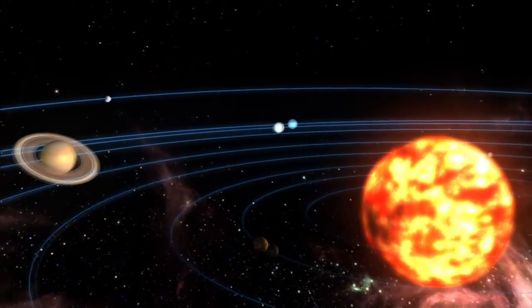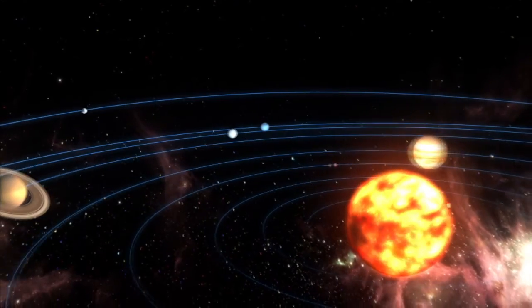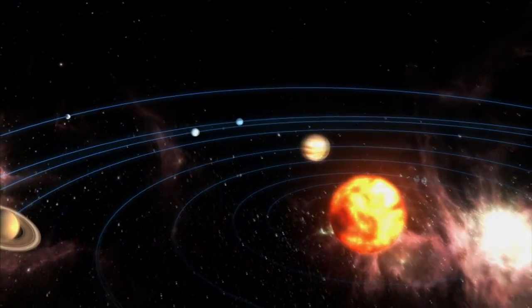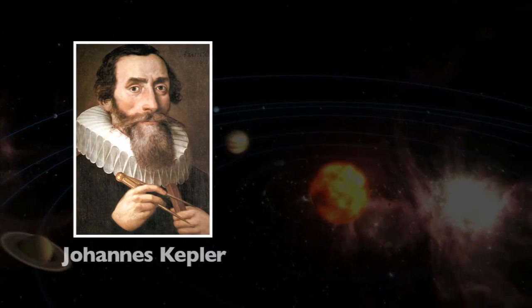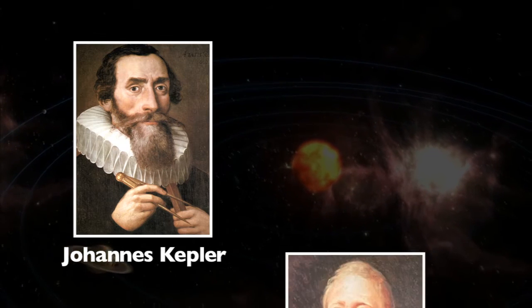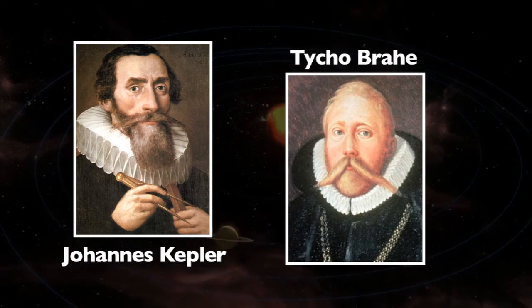The shape of a planet's orbit is an ellipse. This was first discovered by Johannes Kepler, based on careful observations by Tycho Brahe.